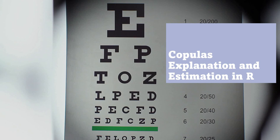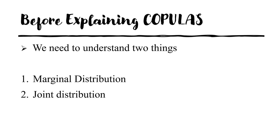I'll try my best to give you a very simple explanation of copulas, and along with that I'll go through some simple functions in R Studio as well to show you how to run copulas. So before further ado, let's move on. Before explaining copulas, we need to understand two things regarding distributions: the first is the marginal distribution and the second one is the joint distribution.